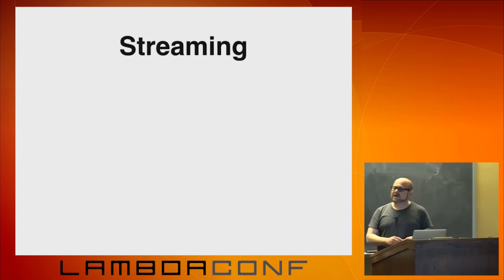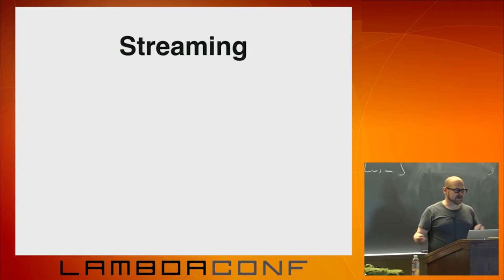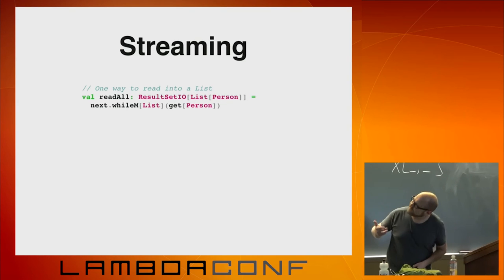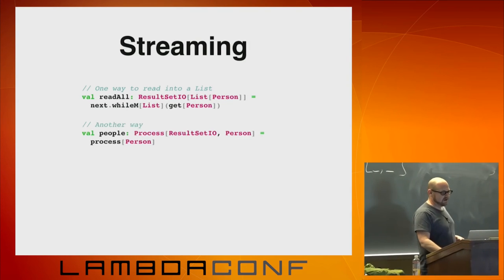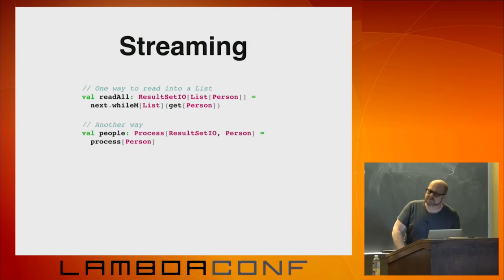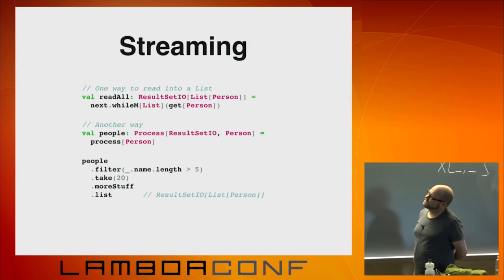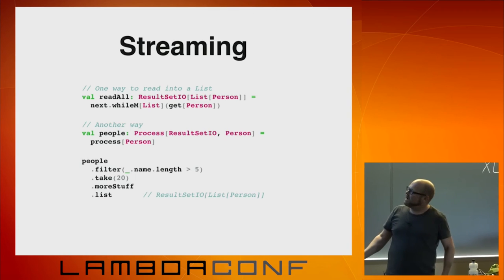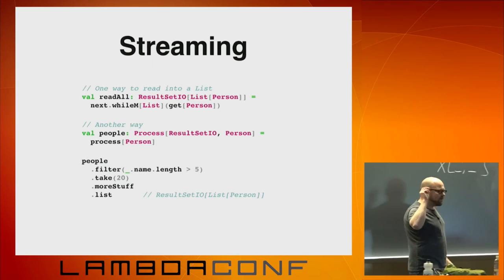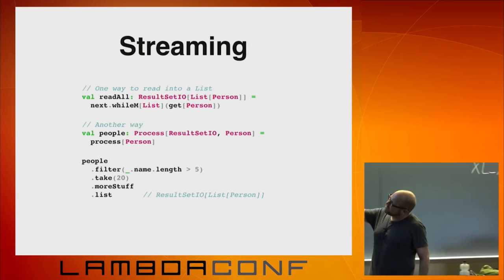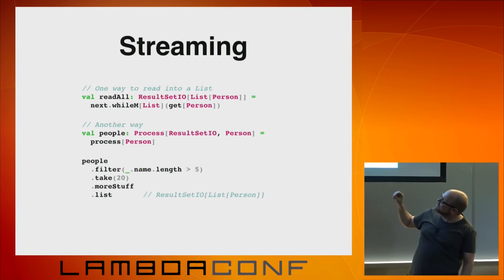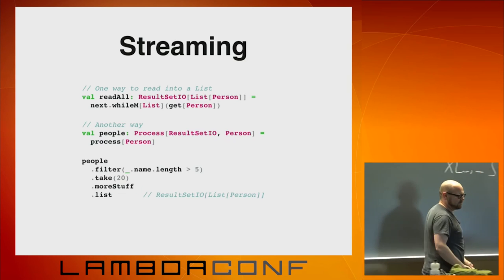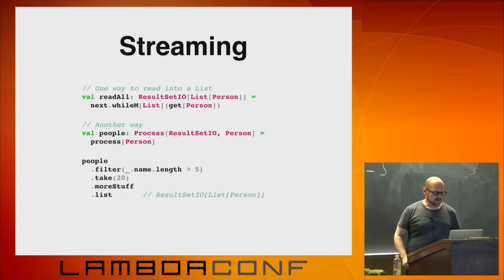Streaming. This dovetails pretty nicely with the earlier talk. This is one way we've seen that we can read a result set into a list of people. But there's another way: we can just ask for a Process of Person. Now we can write a program where we take people and filter and take and do all kinds of fancy stuff, then terminate it and say we want to collect all this stuff into a list. What do we get back? Just a program back — the same type we've been dealing with. So we can take this hunk of streaming logic and insert it into our program just like any other action.